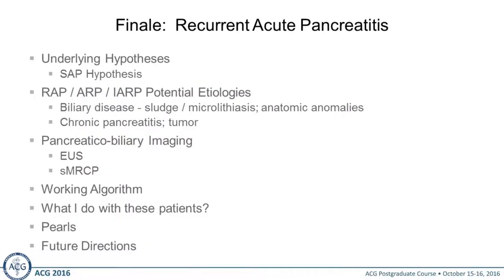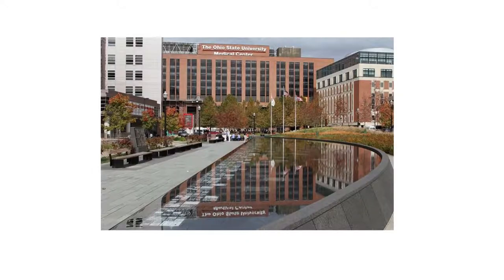To wrap up: the underlying SAPE hypothesis — don't forget that. Biliary disease, sludge, microlithiasis, and anatomical anomalies are the big ones, along with chronic pancreatitis and IPMNs. Pancreatic biliary imaging is now really going to be EUS and MRCP. I've given you a working algorithm, told you what I do with these patients, and talked about some future directions. Thank you very much.